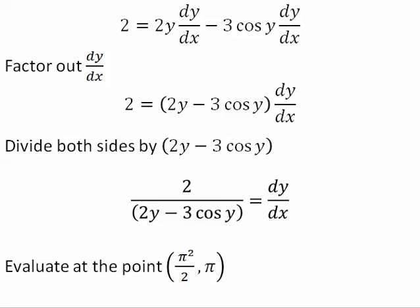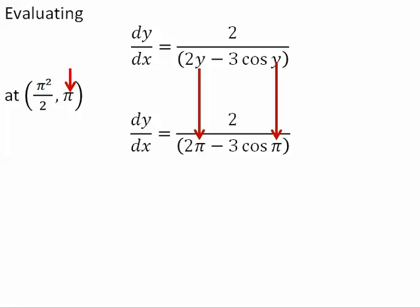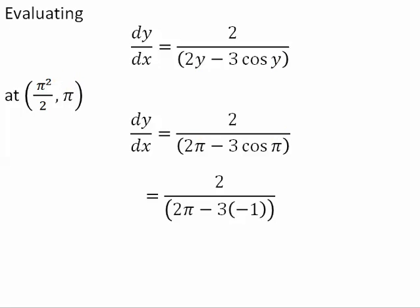After we divide, we evaluate dy/dx at the given point. Evaluating dy/dx at the given point will give us the slope of the line tangent to the graph at that point. dy/dx is written in terms of y, and y is equal to pi. Cosine of pi is equal to negative 1. And so, evaluating dy/dx at the given point gives us the slope of the line tangent to the graph at that point.